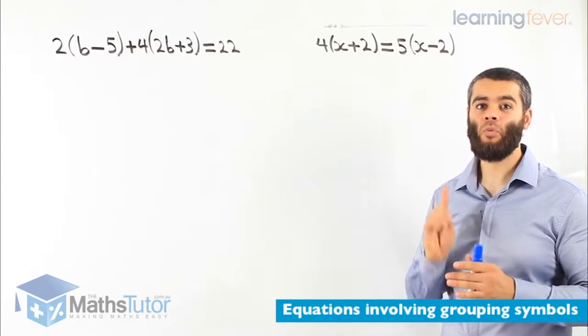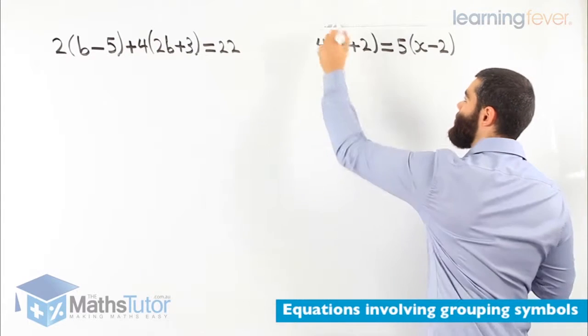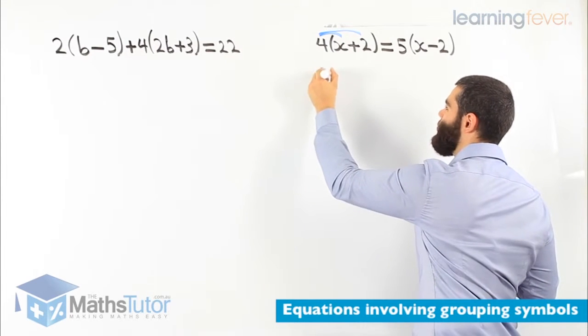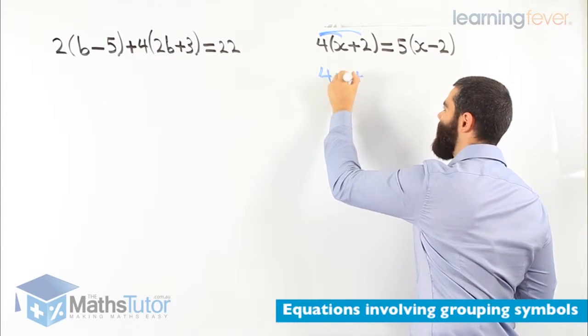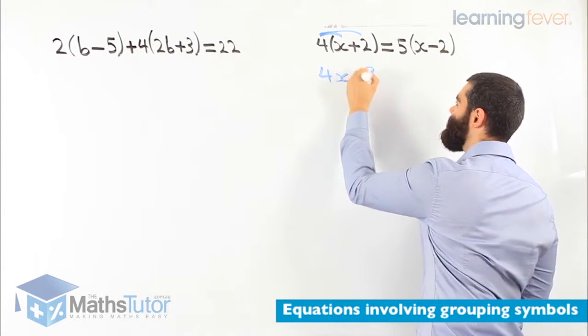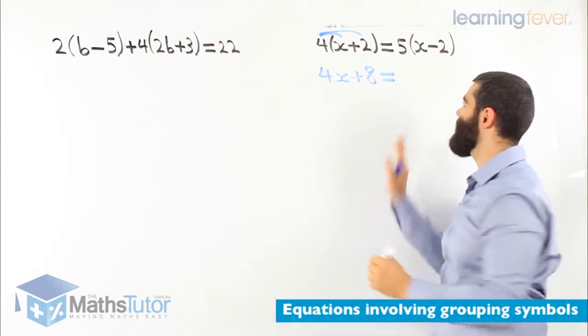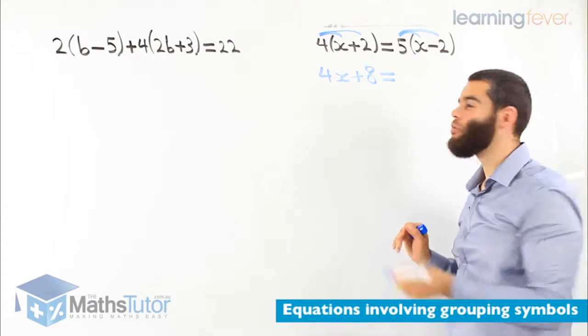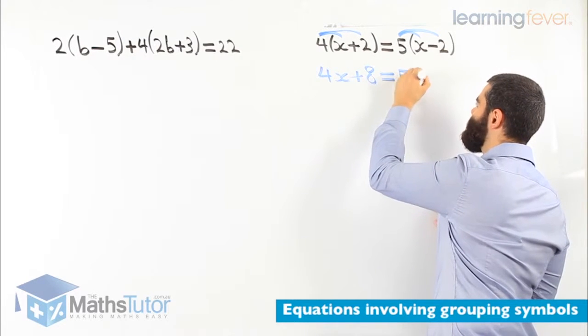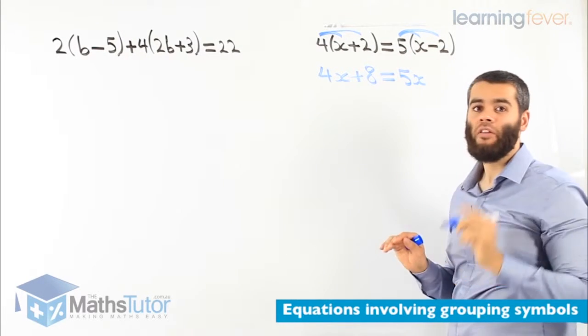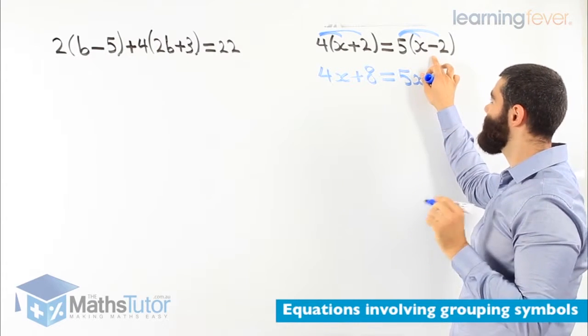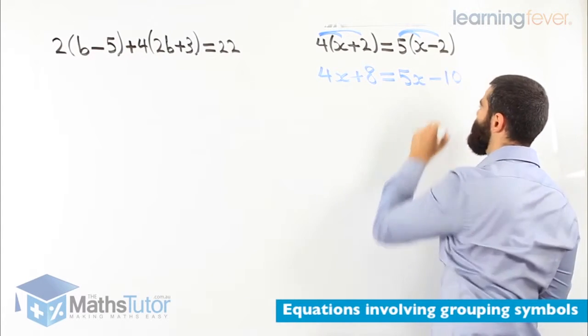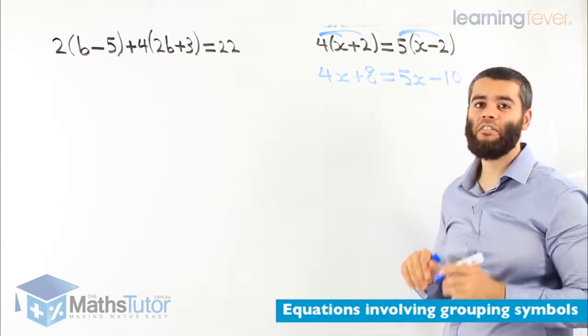So again, what do we do first? We expand. 4 times x and 4 times positive 2. So we have 4x plus 4 times 2 is 8. Now we're going to expand the second one as well. 5 times x and 5 times negative 2. So we have 5x, 5 times negative 2. Very important that you can see the negative. And you identify it's going to be a negative answer. 5 times negative 2, negative 10.